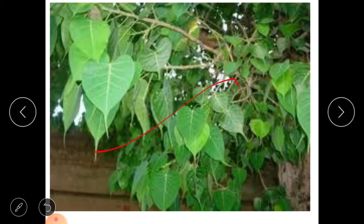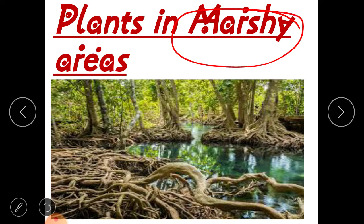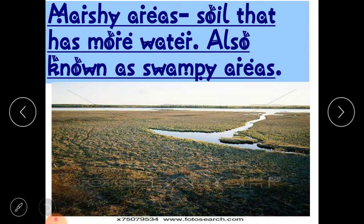Now let's move on to the next category — plants in marshy areas. You might be wondering what marshy areas are. In some places there is a lot of water in the soil, pretty much water all around.